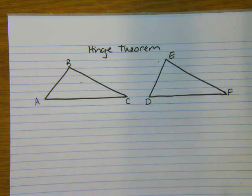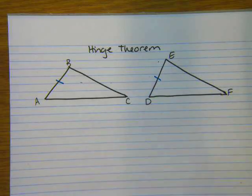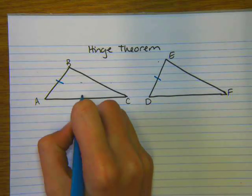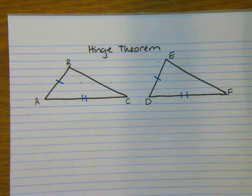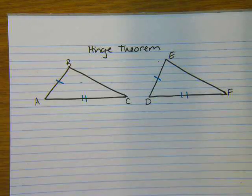Hinge Theorem says that if two sides in one triangle are congruent to two sides in another, so let's identify those two. I'll say AB is congruent to DE, that's one side congruent to another, and I'll say that AC is congruent to DF. So those are my two sides in one triangle congruent to two sides in another triangle.